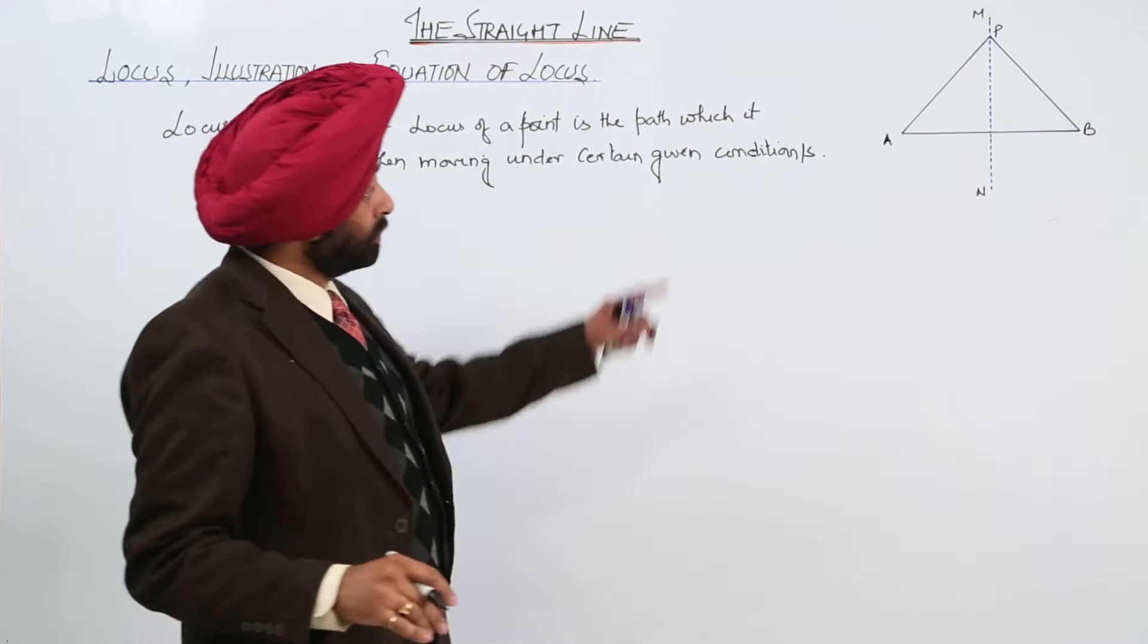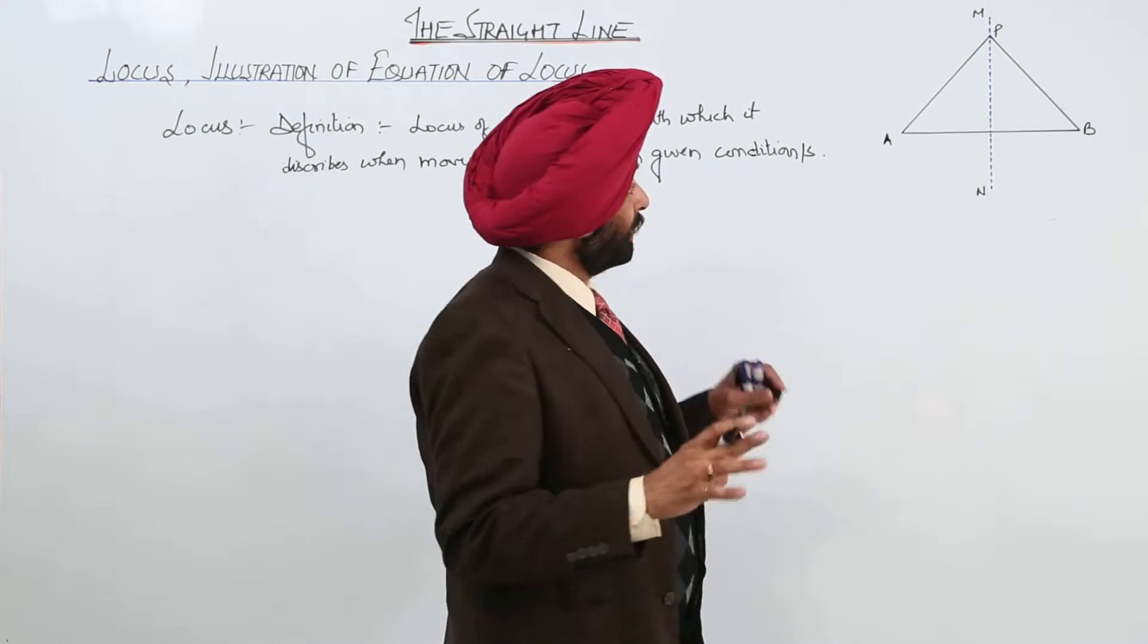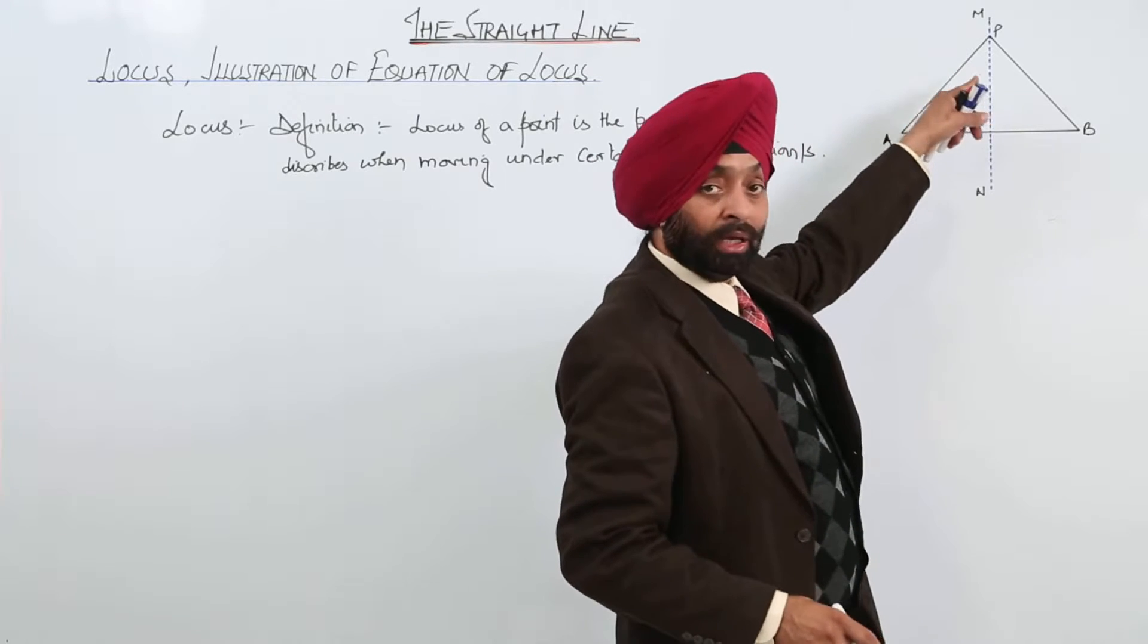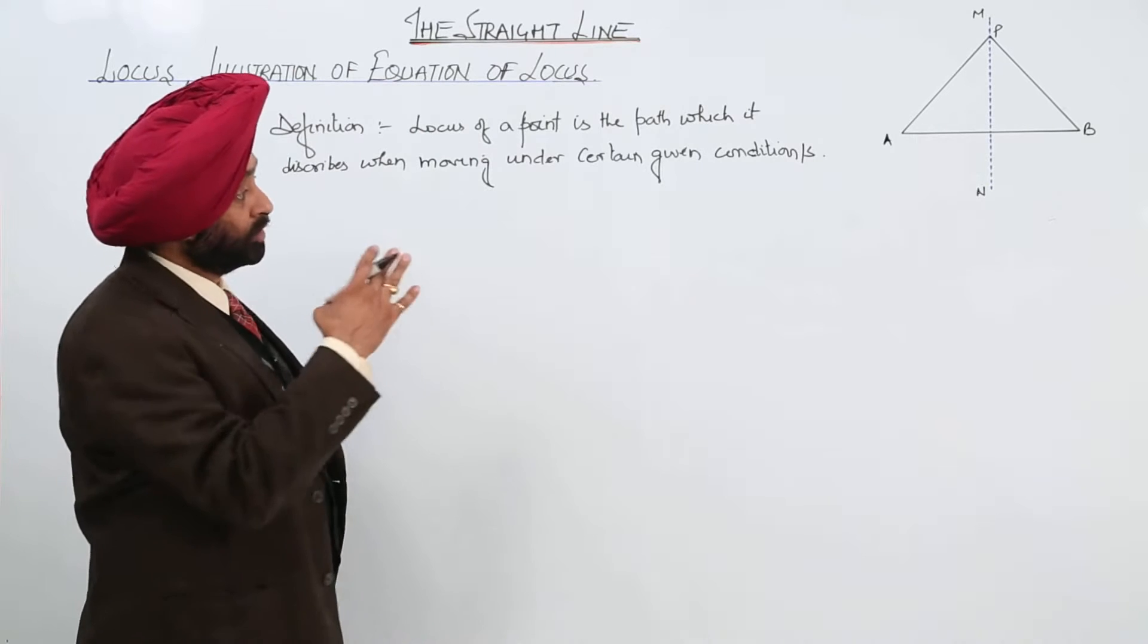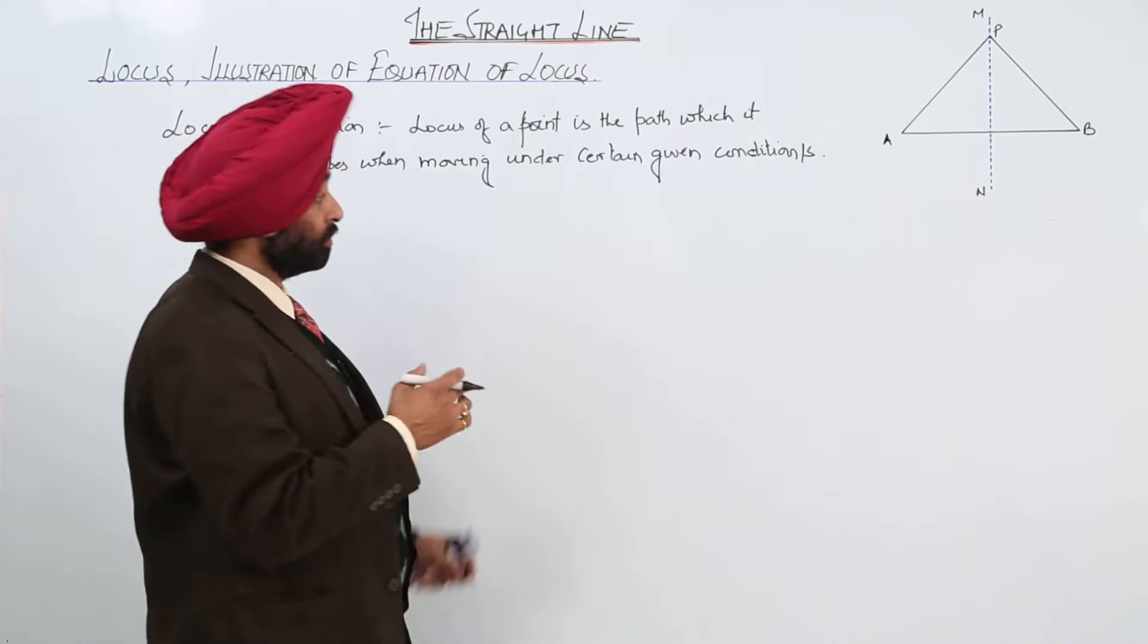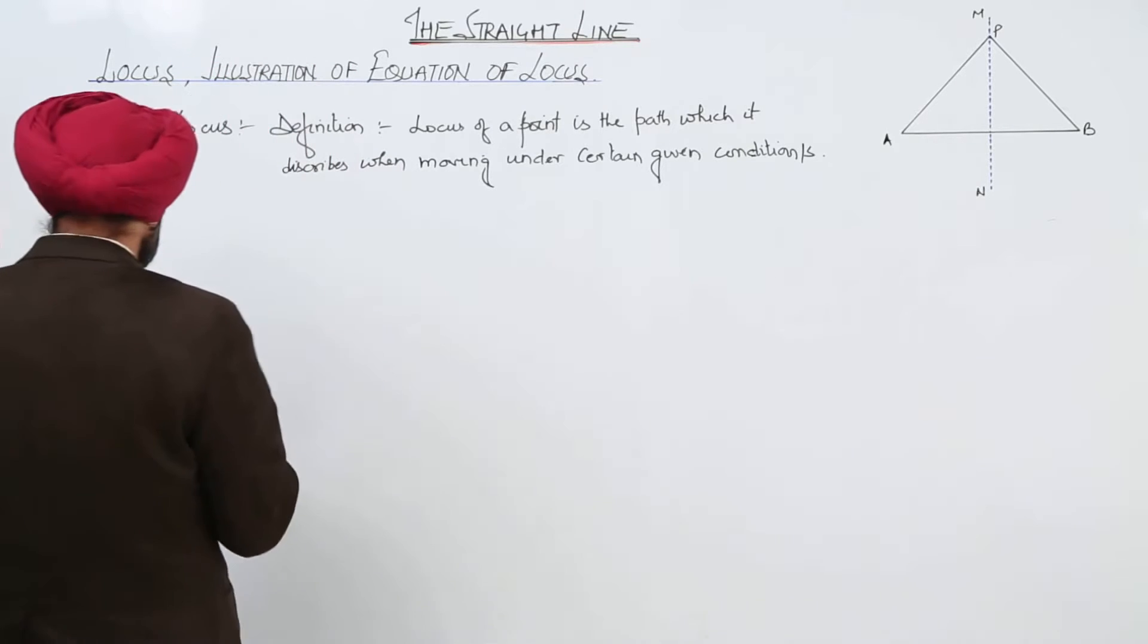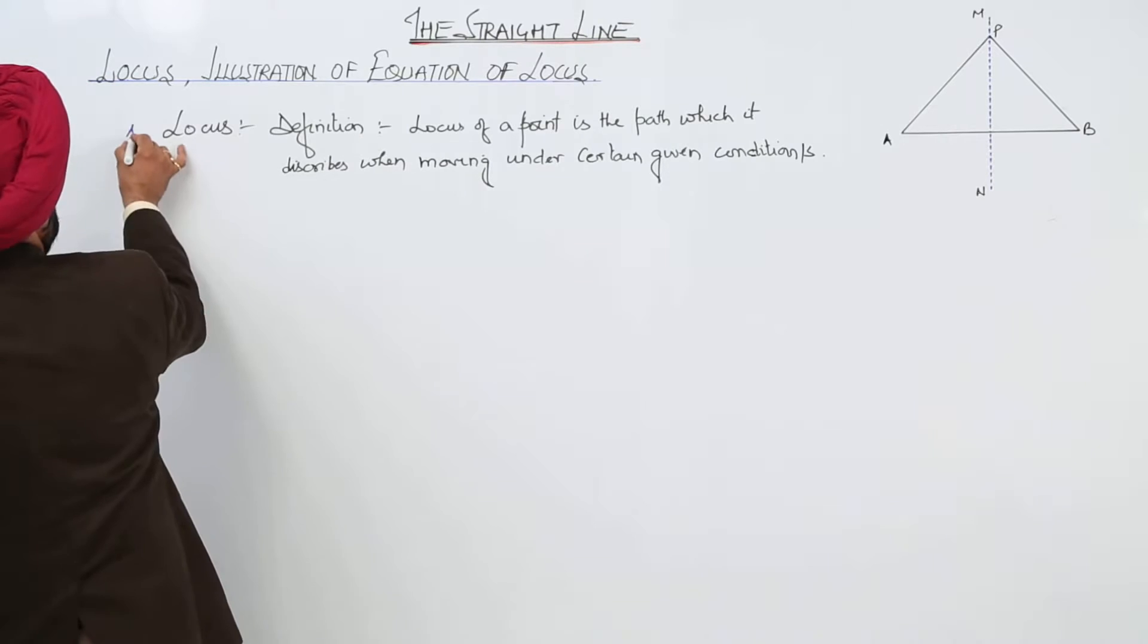Now, for example, here is a triangle. I am just going to give some coordinates for it. And this is a right bisector of AB. So, point P, any point lying on MN will be the locus anywhere but it should lie on the MN.